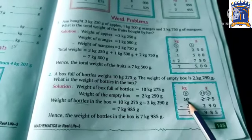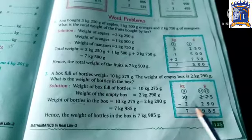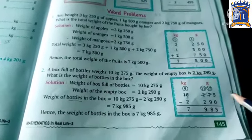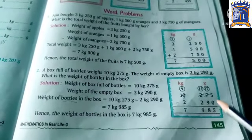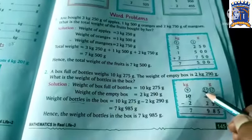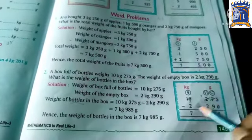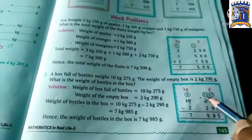You know that bigger term goes on top. In subtraction, 10, 275 minus 2, 290. Now 5 minus 0 is 5. 7 is smaller than 9, so we will borrow from 2. 2 has become 1. Now 17 minus 9 is 8.